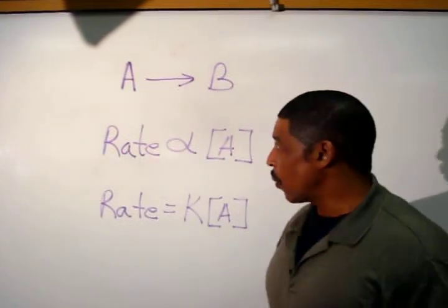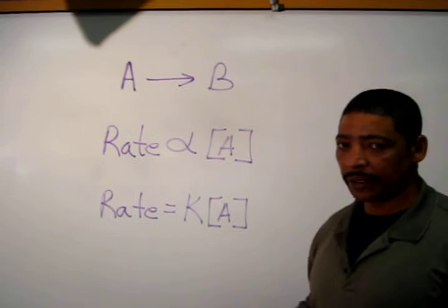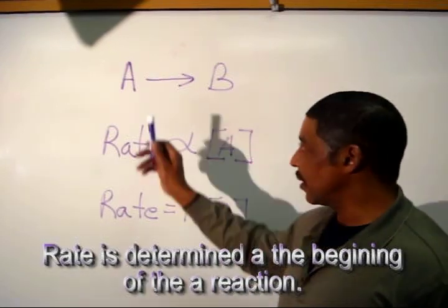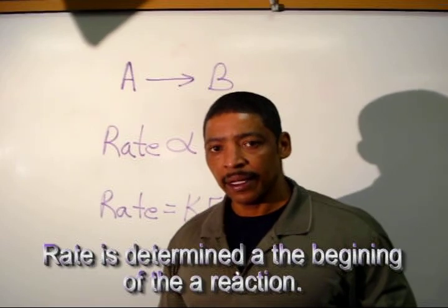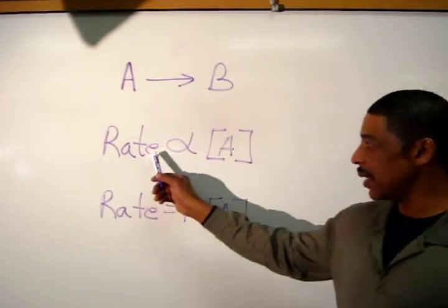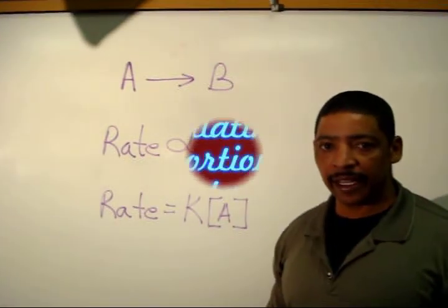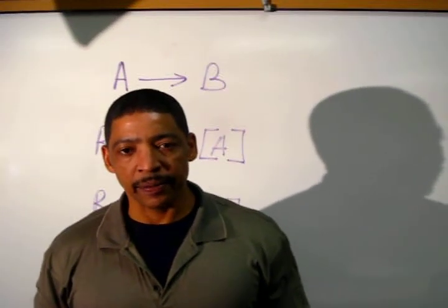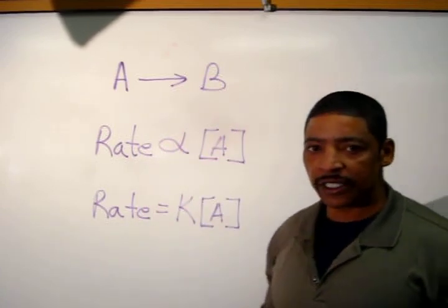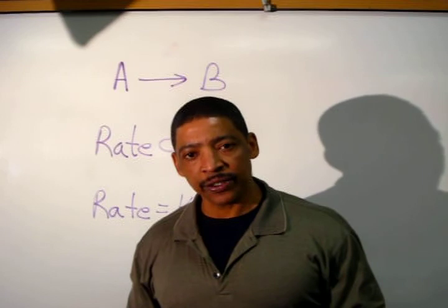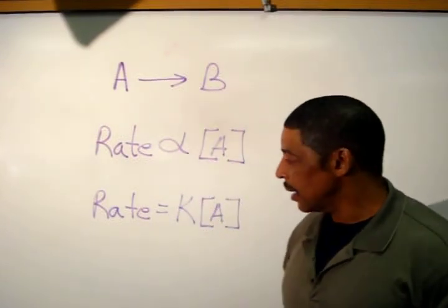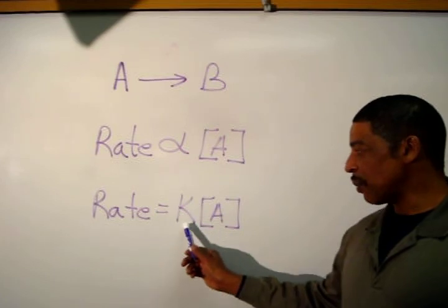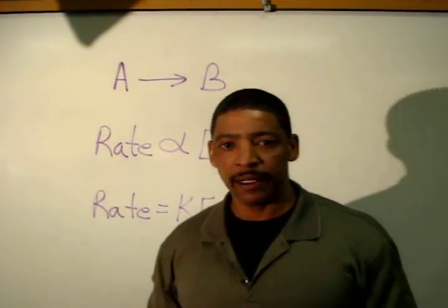Consider the simple reaction where a reactant A produces product B. In this reaction, the initial rate is related to the concentration of reactant A. Therefore, we may say that the rate is proportional to the concentration of reactant A.